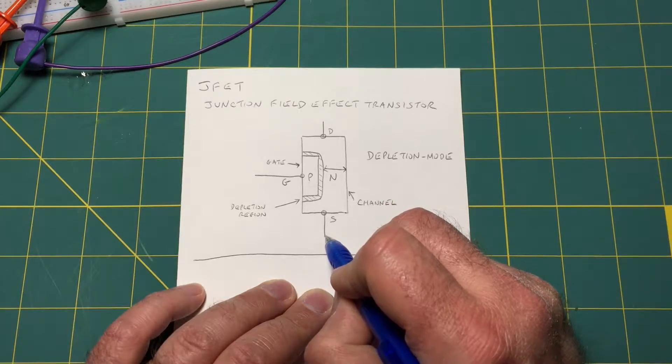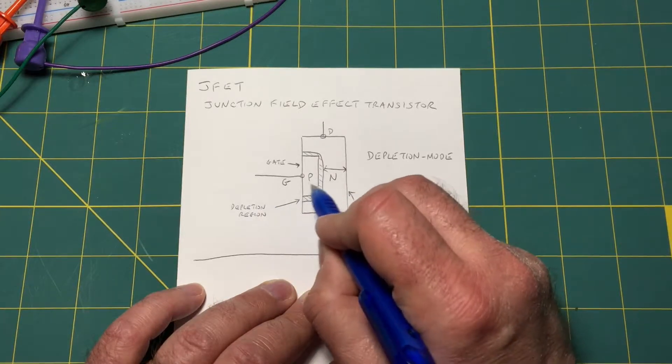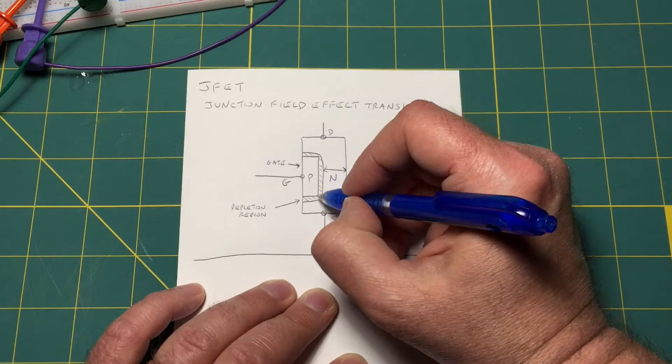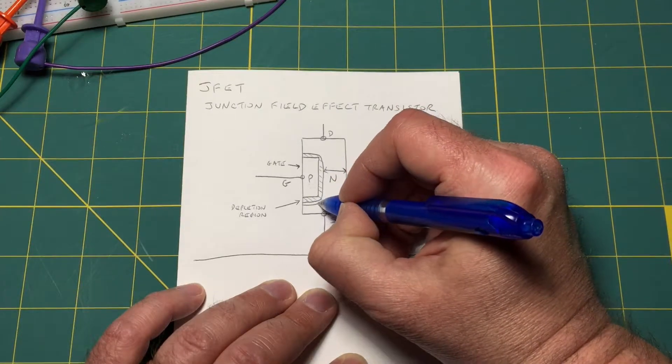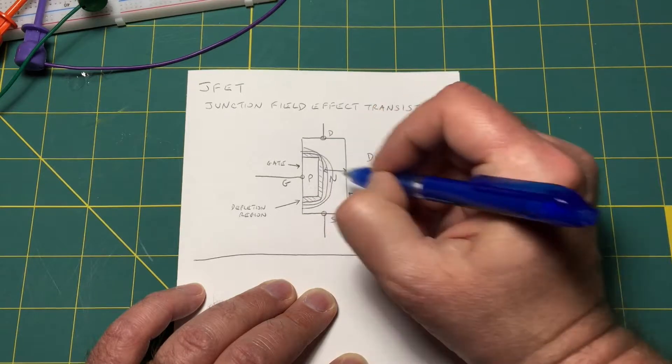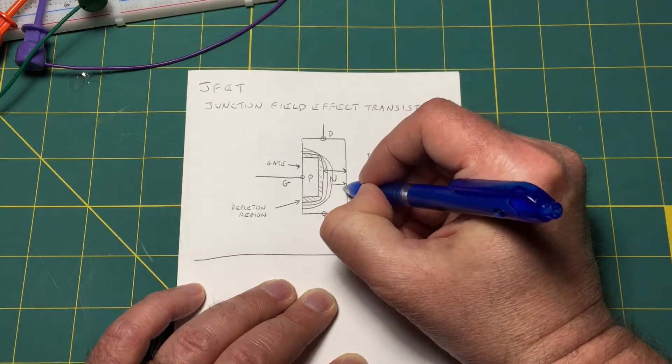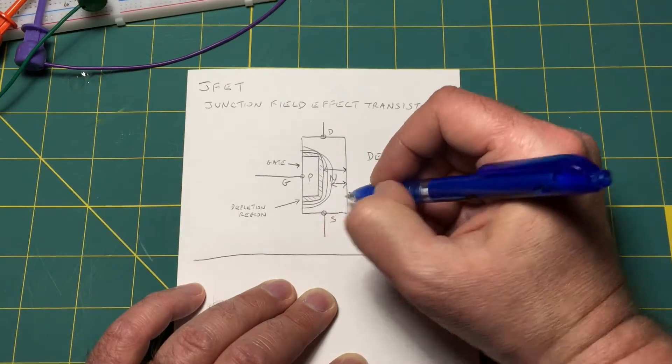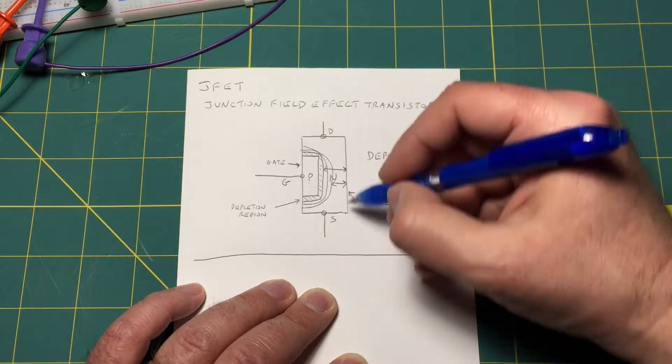Now you reverse bias the gate-to-source junction here and as you reverse bias this depletion region will get larger and larger and the channel width will get narrower and narrower and the amount of current will decrease.